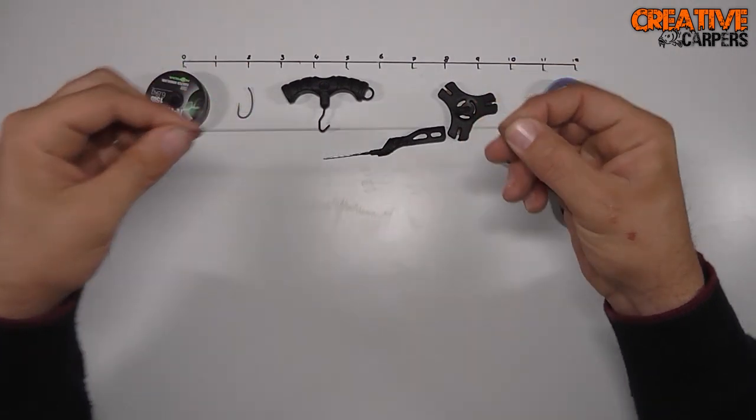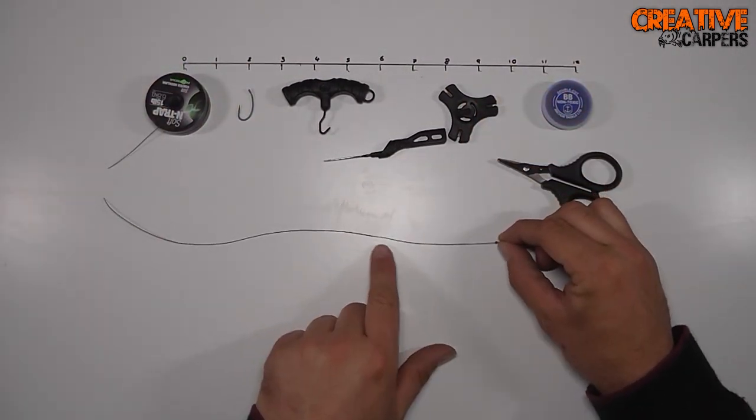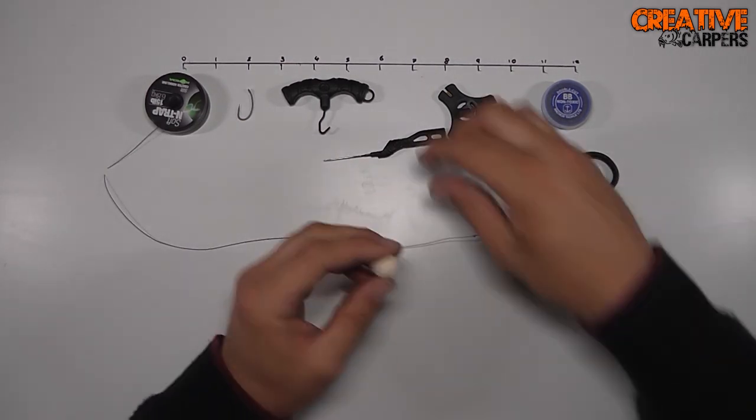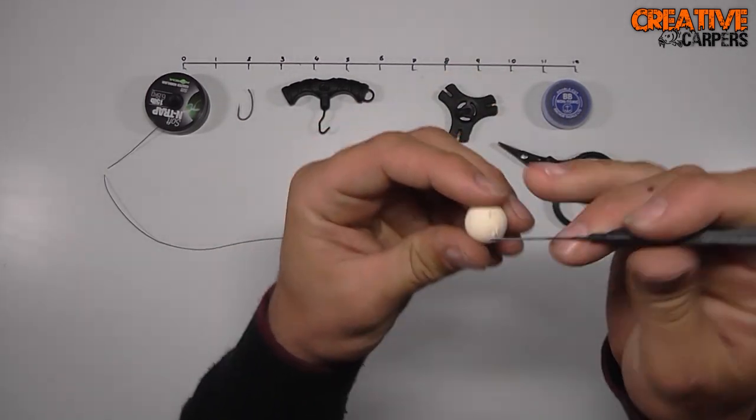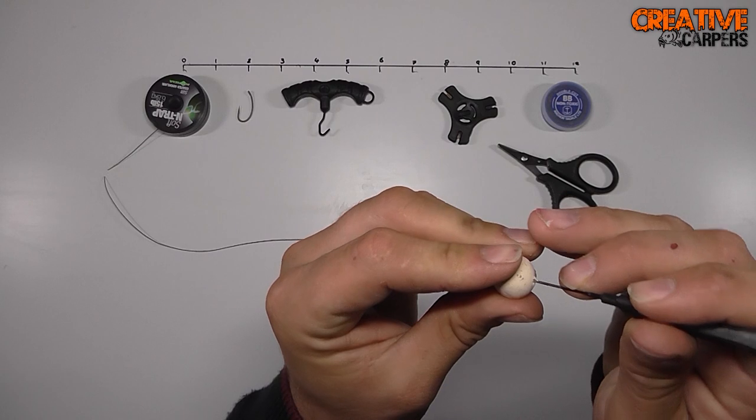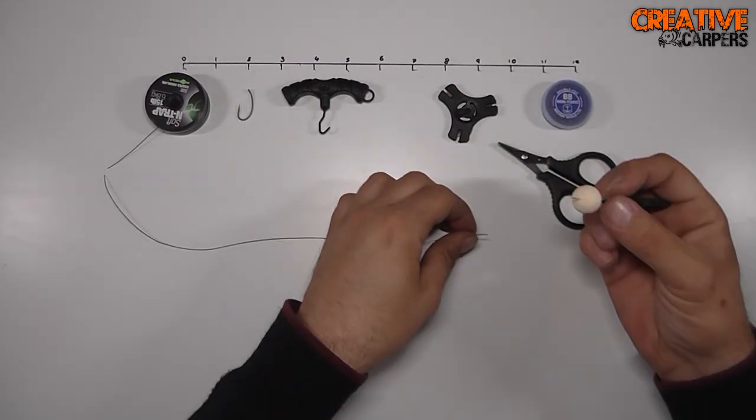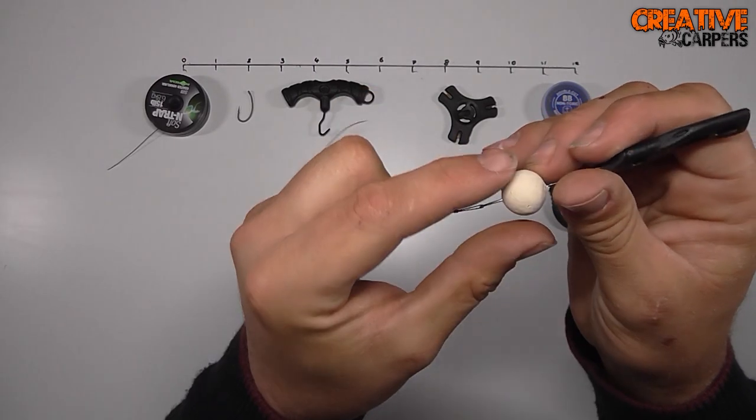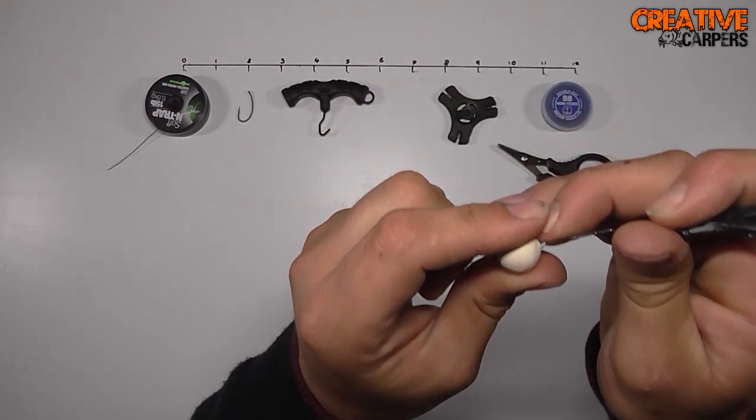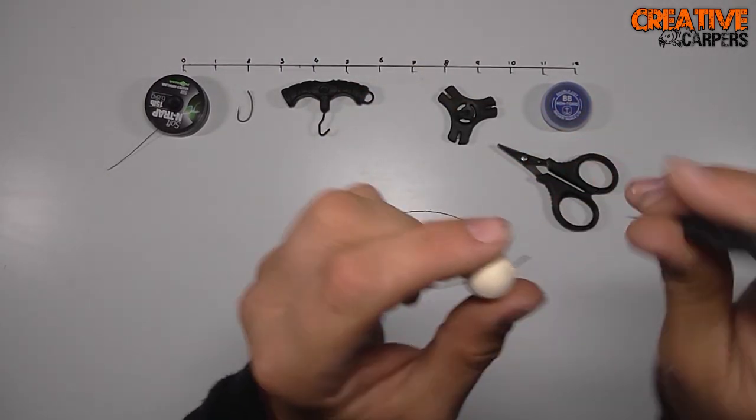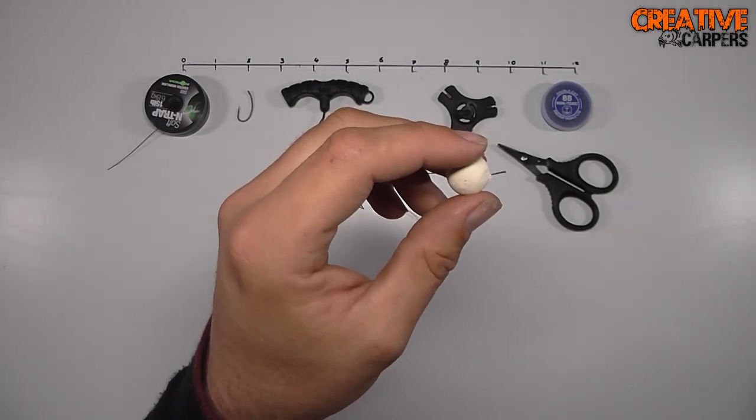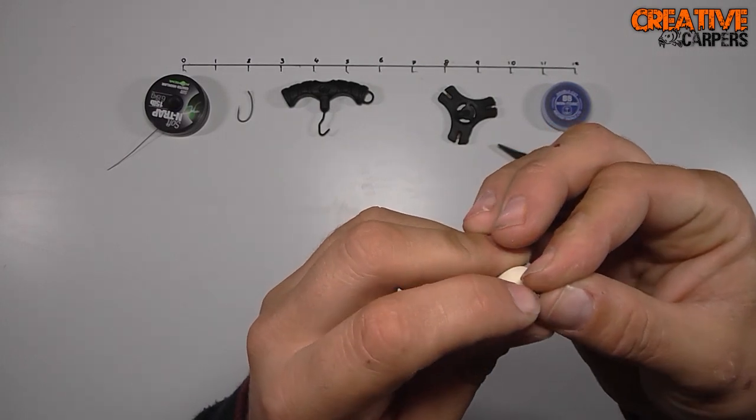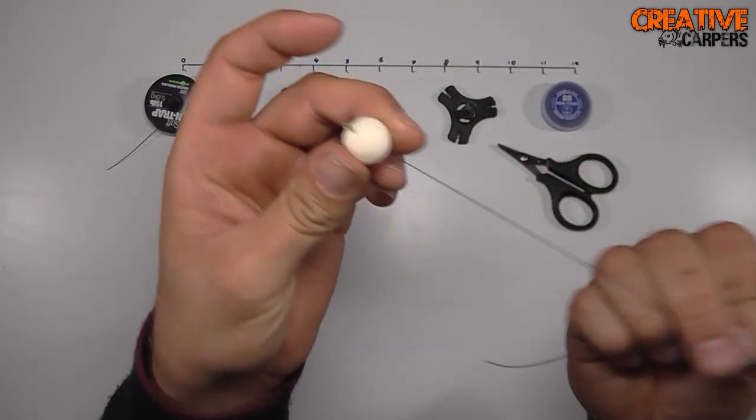So you've got something that looks a little bit like that. You've got a stripped part and a little loop. At this point I like to take the boiler that I'm going to be using, in this case it's a 14mm pop-up, and I like to put that on before I tie the knot, just so I know how long the hair is going to be in the final rig. So just put your boiler stop on there, pull that down.